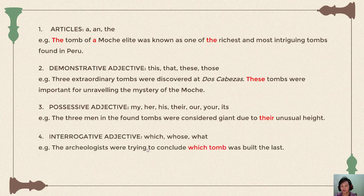The next type is interrogative adjectives: which, whose, and what. They are called interrogative because they are commonly used to ask questions. Example: 'The archaeologists were trying to conclude which tomb was built last.' Here 'which' refers to a choice. 'Whose' indicates possession, and 'what' depends on what kind of noun you want to ask about.